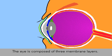The eye is like a camera. It has an envelope that holds a lens and instead of film, a retina that receives the image.